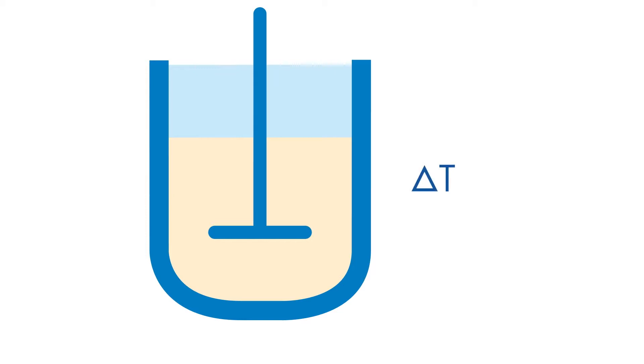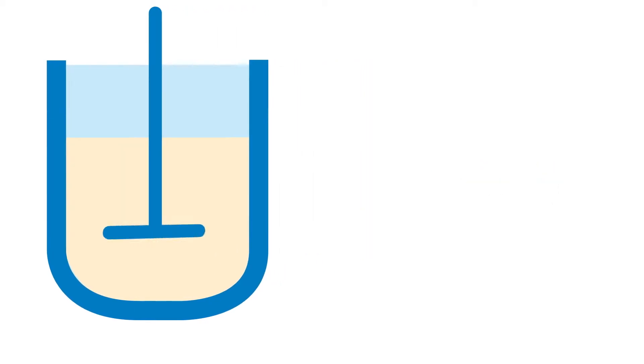The heat flow principle follows the concept of measuring the driving force, delta T, which is the temperature difference between the temperature of the reaction mass, TR, and the surrounding temperature, TJ, as delta T is a measure for the power of the reaction.